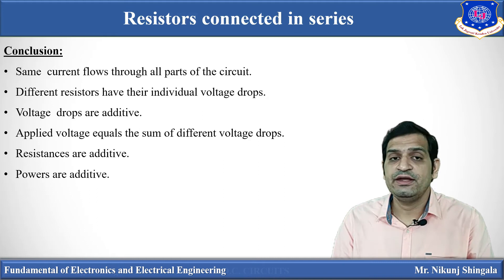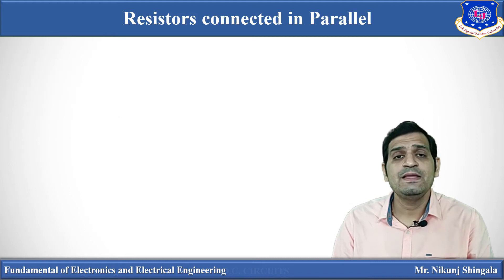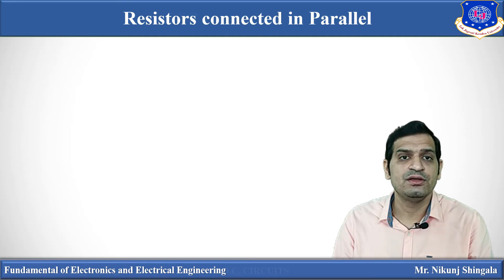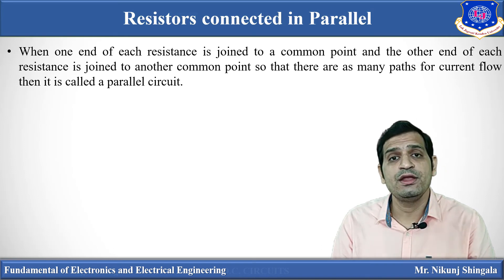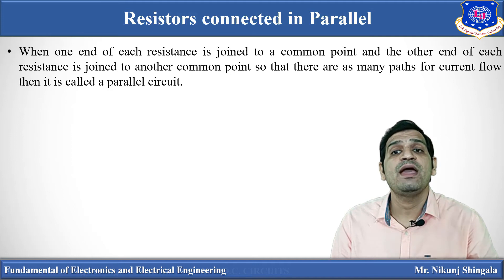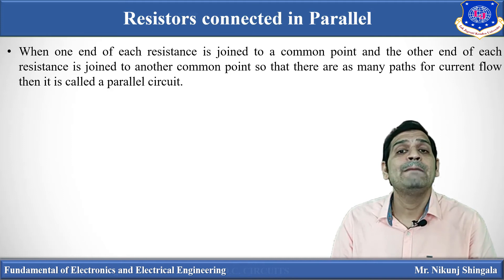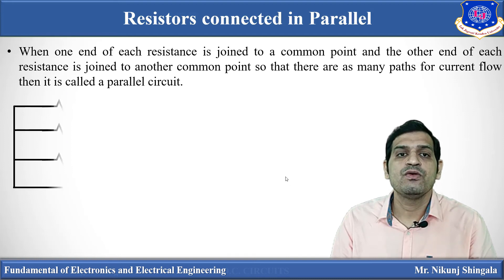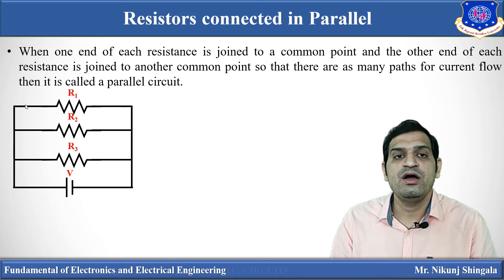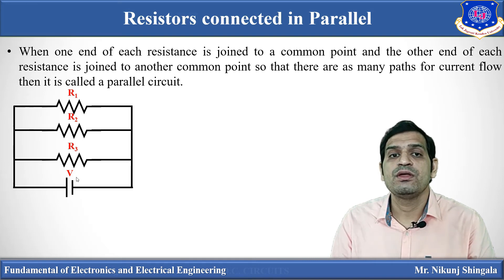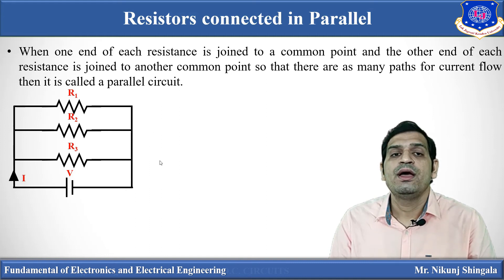Now moving to the parallel connection of resistors. The definition: when one end of each resistor is joined to a common point and the other end is joined to another common point, so that there are many paths for the flow of current, it is known as a parallel circuit. Here you can see three resistors R1, R2, and R3 connected in parallel across a battery of potential V.